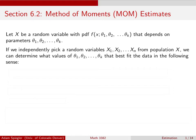In this video we are going to introduce another method of estimating parameters called the method of moments, often abbreviated MOM. We start with some random variable X that has a PDF which depends on k different parameters — theta_1, theta_2, up to theta_k — and we independently pick n random variables from this distribution: X_1 up to X_n.